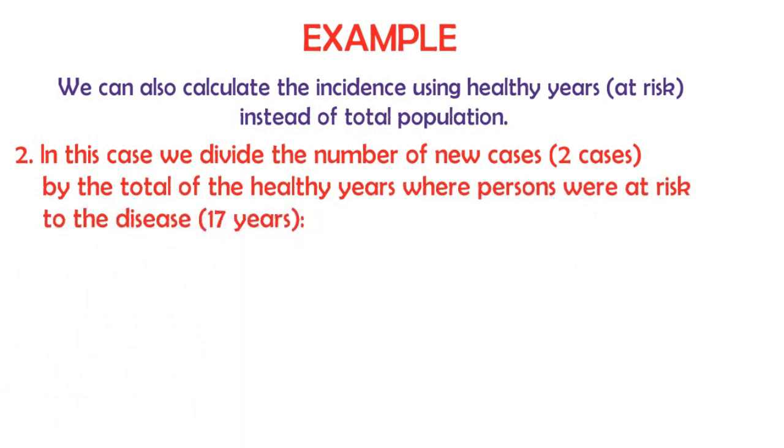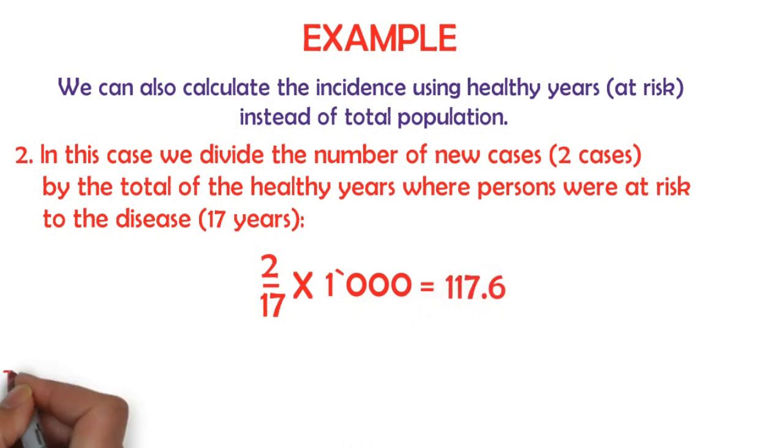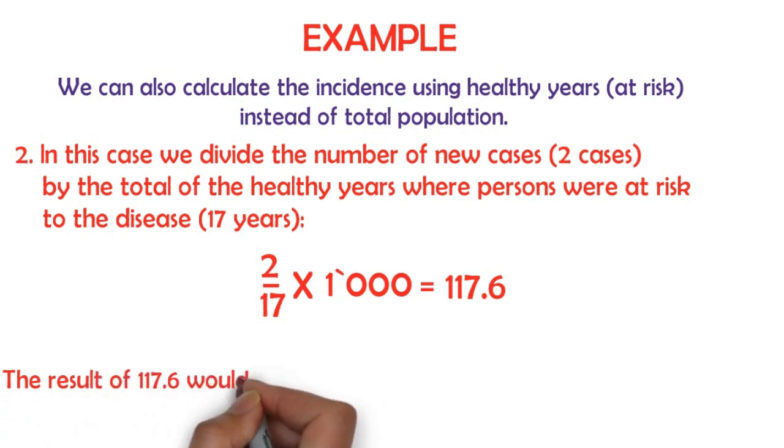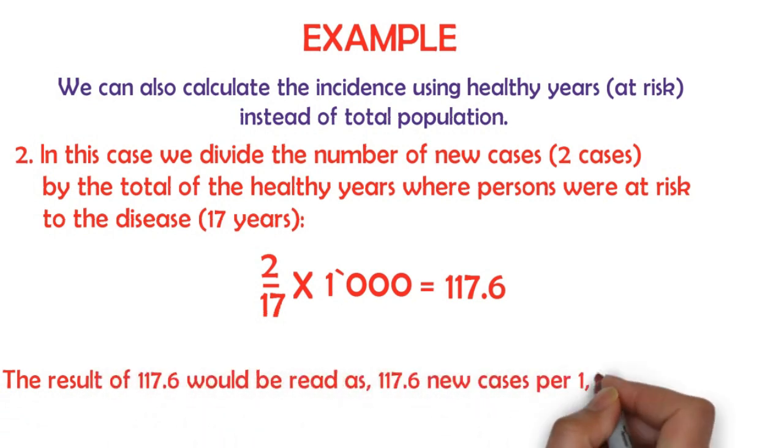So we'll do 2 divided by 17 multiplied by 1,000, which equals 117.6. The result of 117.6 would be read as 117.6 new cases per 1,000 person-years.